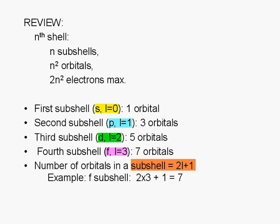For example, the orbital quantum number for the f subshell is 3. 2 times 3 plus 1 equals 7.